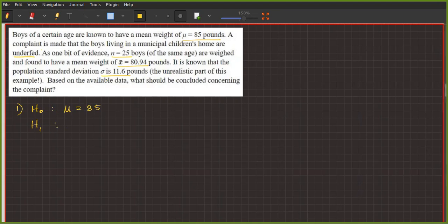The alternative hypothesis is underfed. So underfed, μ must be less than 85. We will test that the μ is less than 85 pounds.